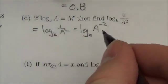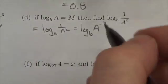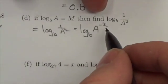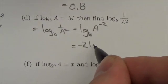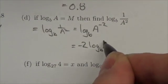And now the logarithmic rules allow me to bring that exponent down. This becomes negative 2 log base b of a.